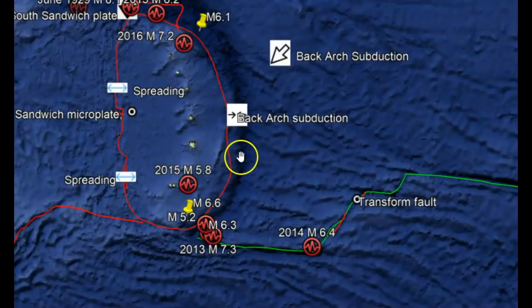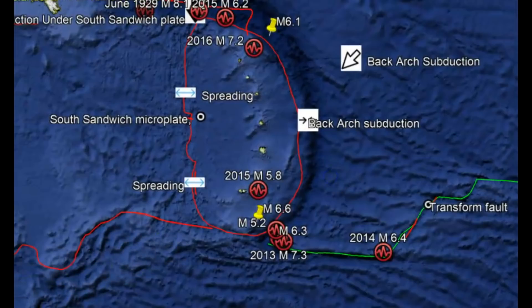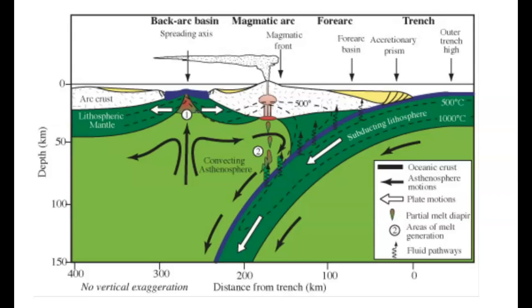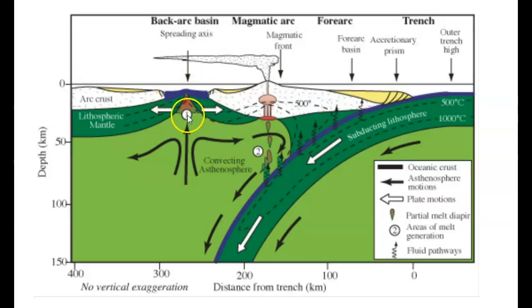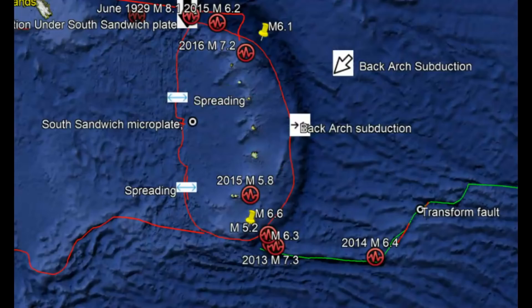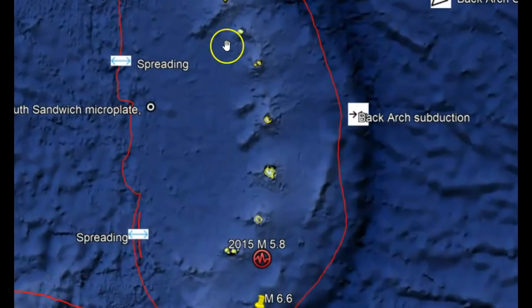This here is the South Sandwich micro plate. On Wikipedia they have a good picture — a cartoon of what's going on. We have the subduction of the African plate going underneath the micro plate of the Sandwich Islands, and then we have the little volcanoes that are coming up. And then we have spreading over here to the left. Going back to Google Earth, we have the South Sandwich micro plates and all these tiny islands that have come up.